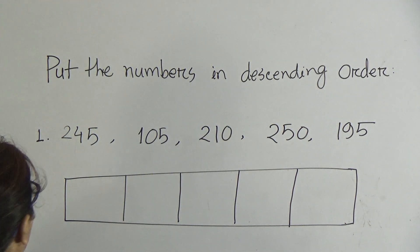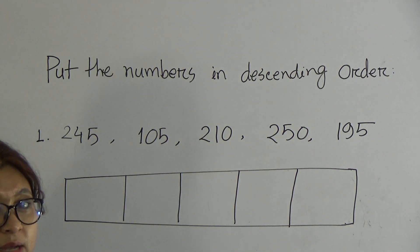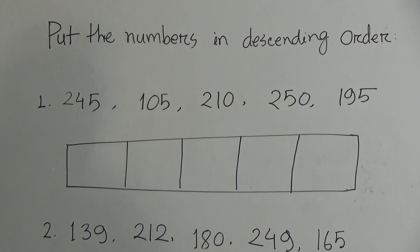So dear learners, what is descending order? Descending order means we arrange the numbers from biggest number to smallest number. In previous class we learned ascending order, and we know how to complete ascending order. Today we will learn descending order.